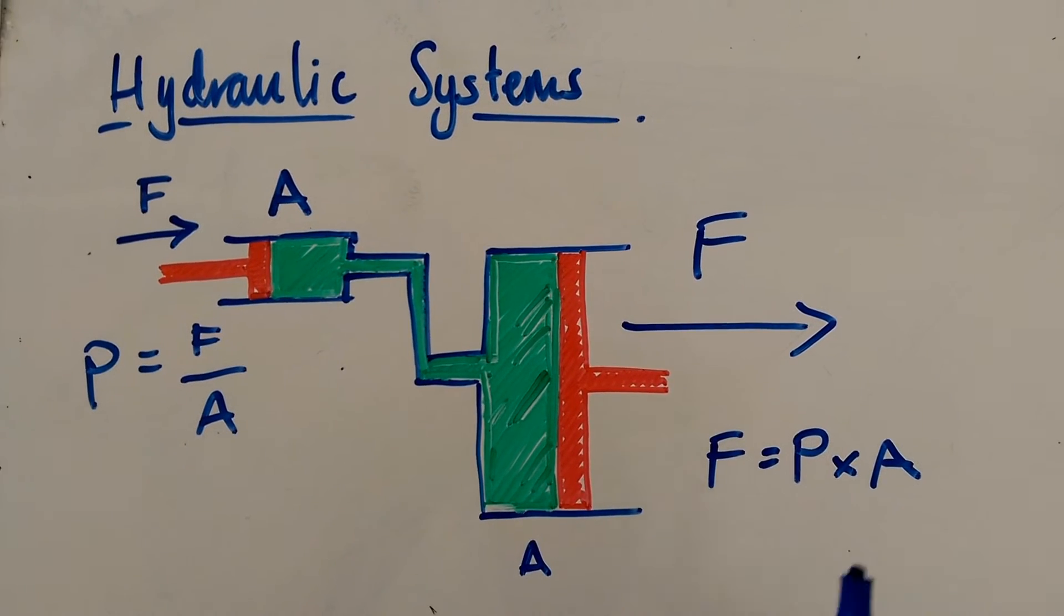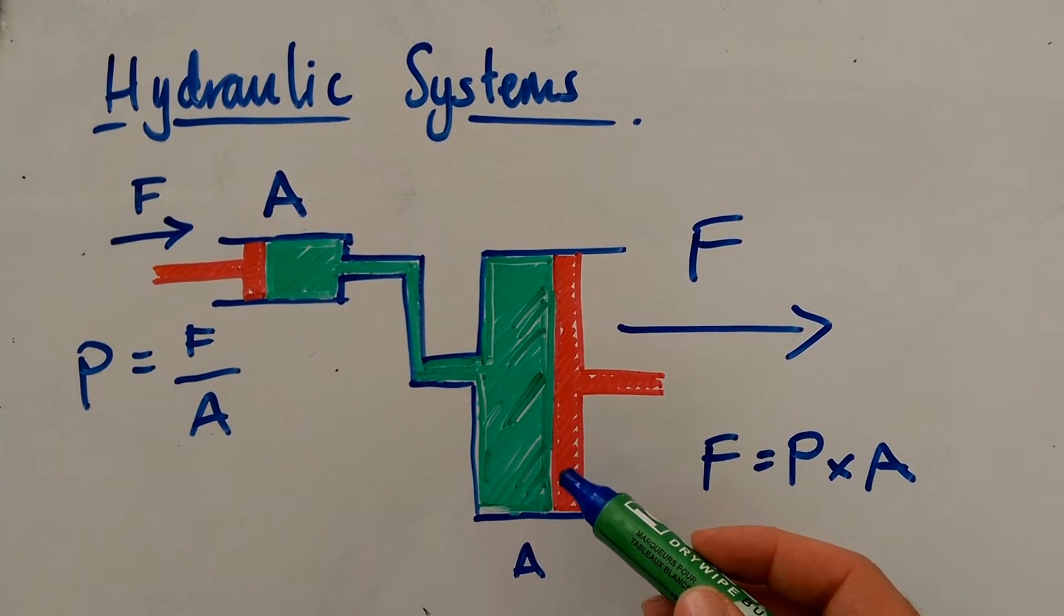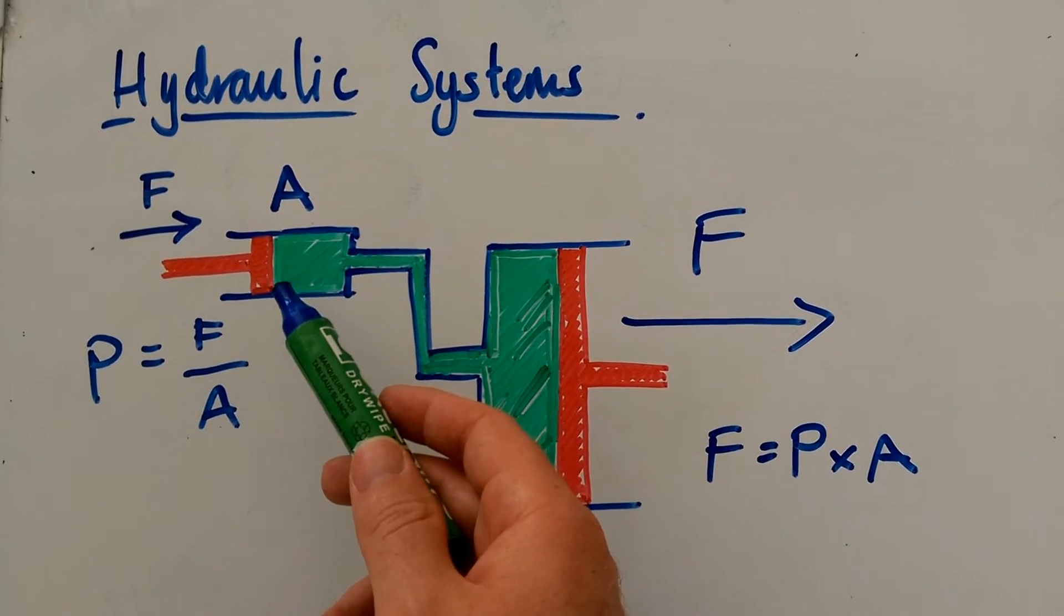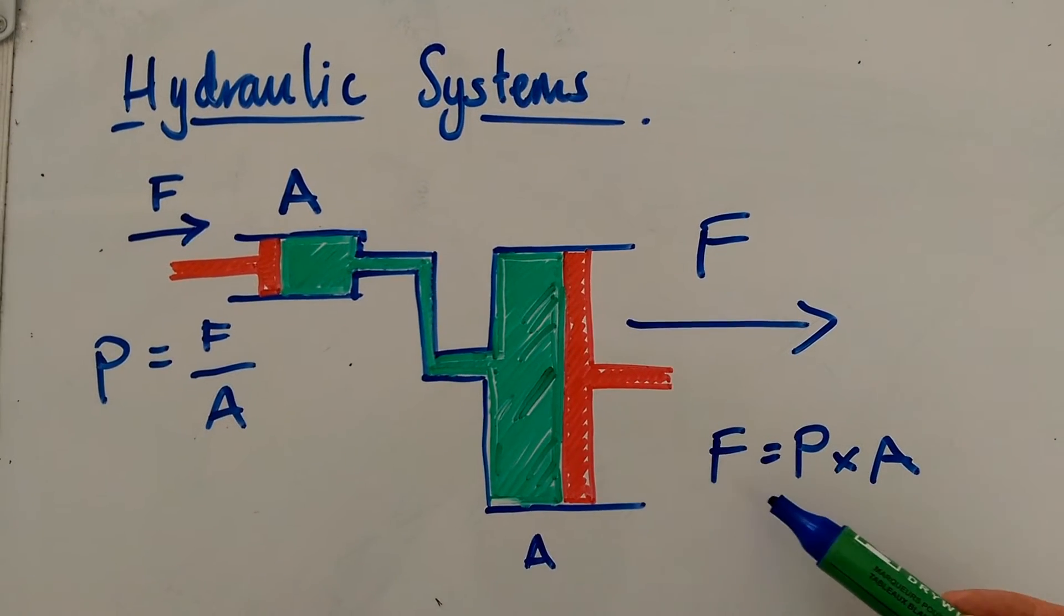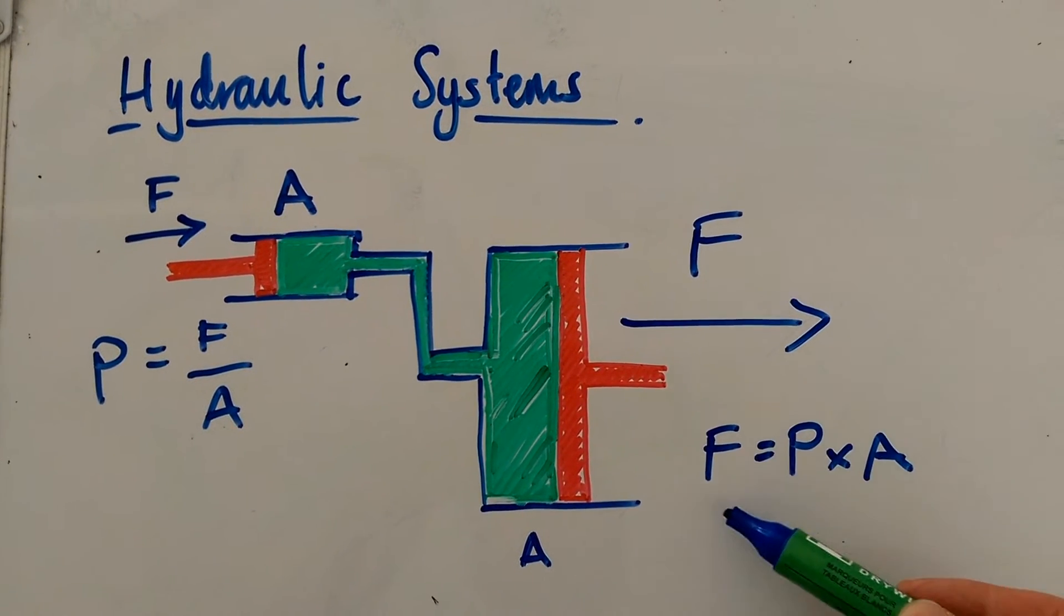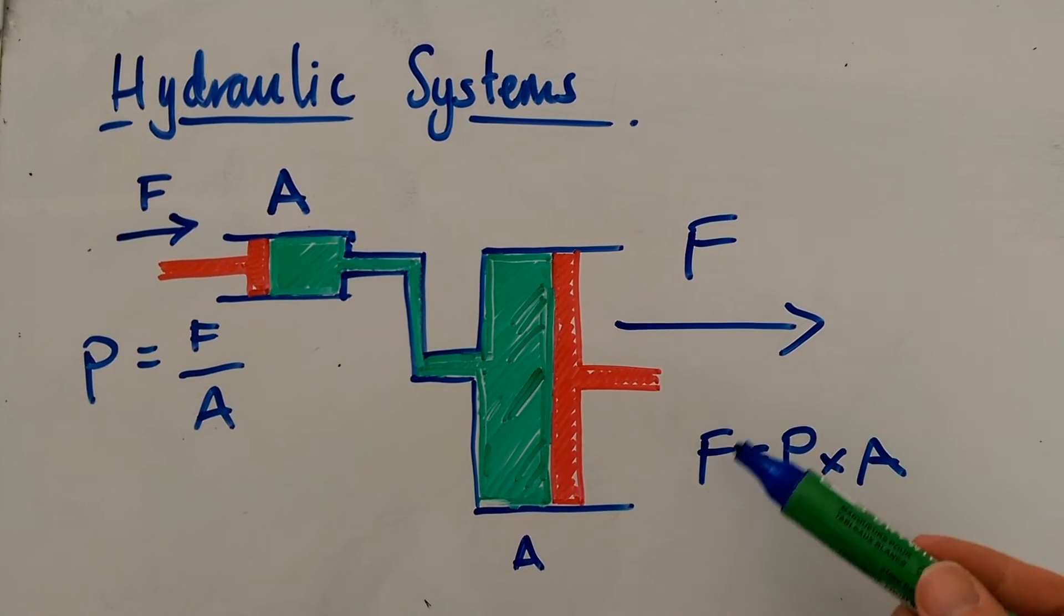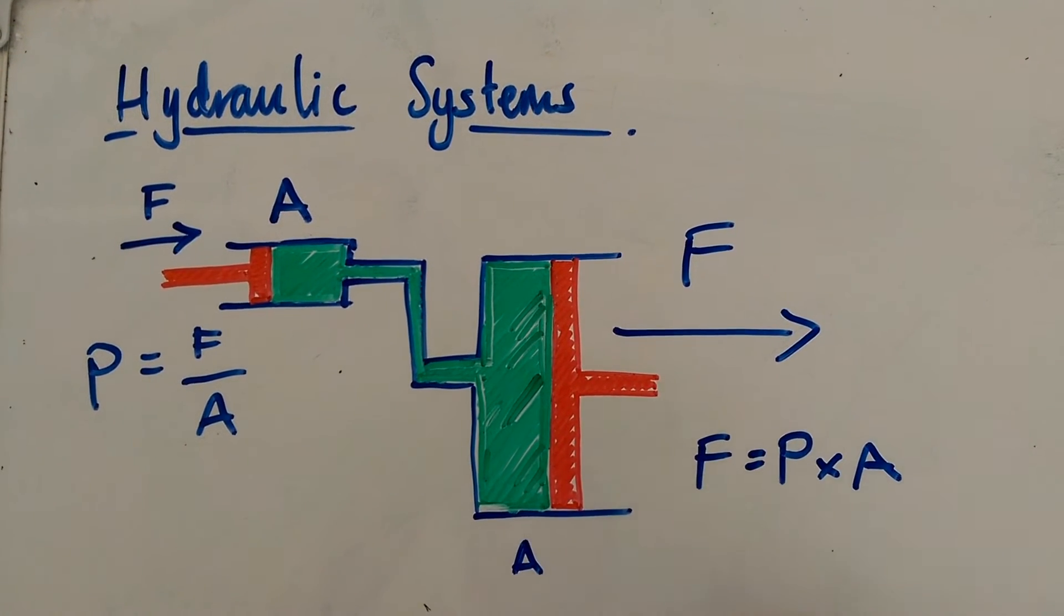Now in this simple example, you can see the area of this piston is much greater than the area of this piston. So therefore, that same pressure causes a much larger force here.